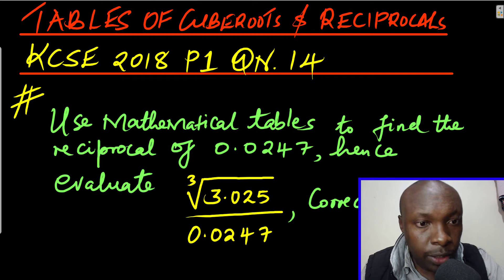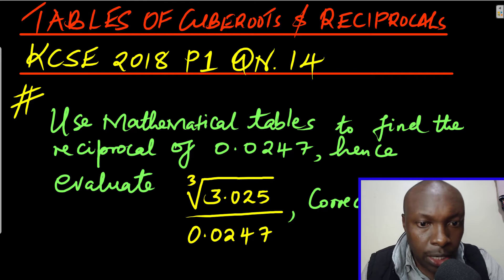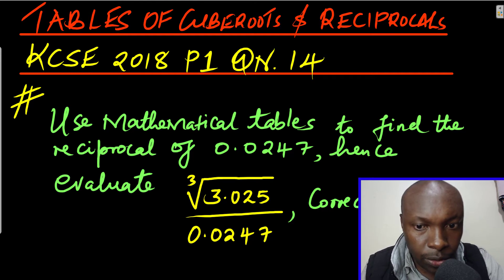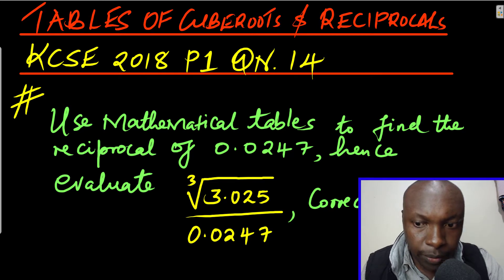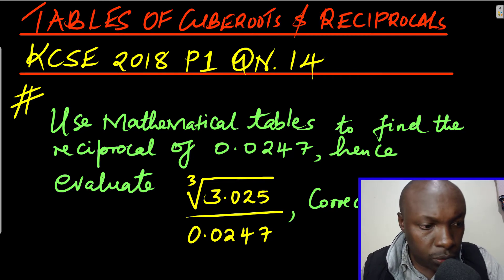Hello viewers and welcome to the lesson: Tables of Cube Roots and Reciprocals. Use mathematical tables to find the reciprocal of 0.0247, hence evaluate the cube root of 3.025 divided by 0.0247, correct to two decimal places.